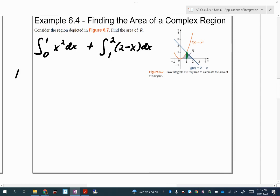So we know this one, the antiderivative here is going to be 1 third x cubed evaluated at 1 and 0. So we're going to find that real quick. So f of 1 minus f of 0, that's going to be 1 third minus 0 or 1 third.